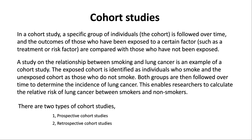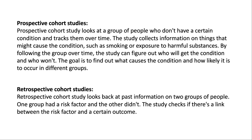There are two types of cohort studies: prospective cohort studies and retrospective cohort studies. A prospective cohort study looks at a group of people who don't have a certain condition and tracks them over time. The study collects information on things that might cause the condition, such as smoking or exposure to harmful substances. By following the group over time, the study can figure out who will get the condition and who won't, and find out what causes it and how likely it is to occur in different groups.